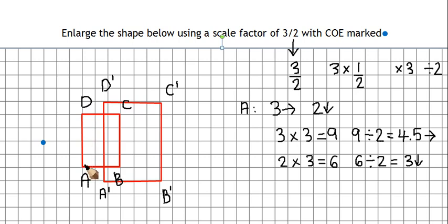4 times 3 is 12, divided by 2 is 6, so that's correct. And then 3 times 3 is 9, divided by 2 is 4.5. So that length there is correct as well.